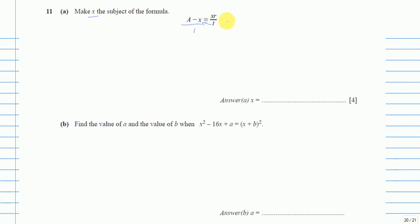So t will be crossed up on the left hand side or multiplied on both sides—it's exactly the same thing. What I will end up with is (a - x) times t equals xr.